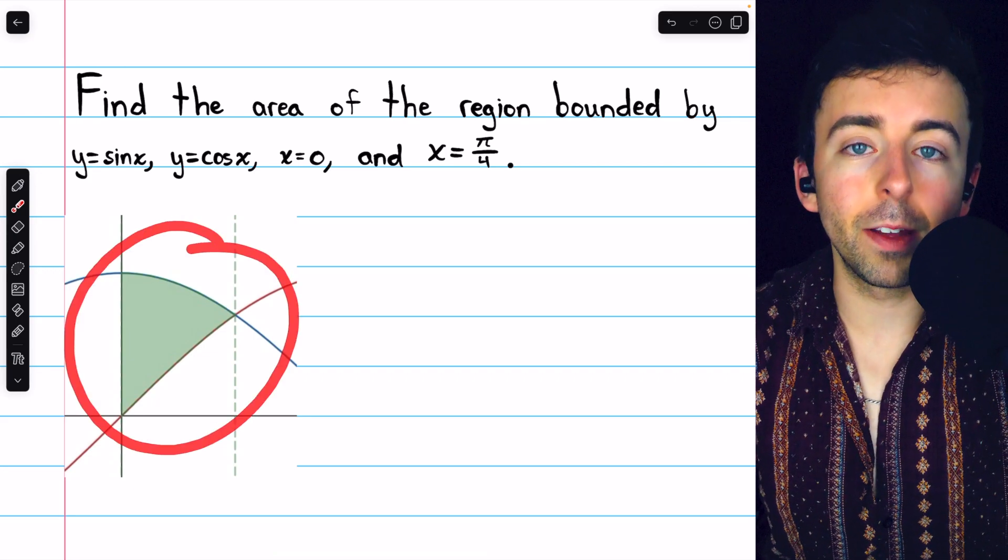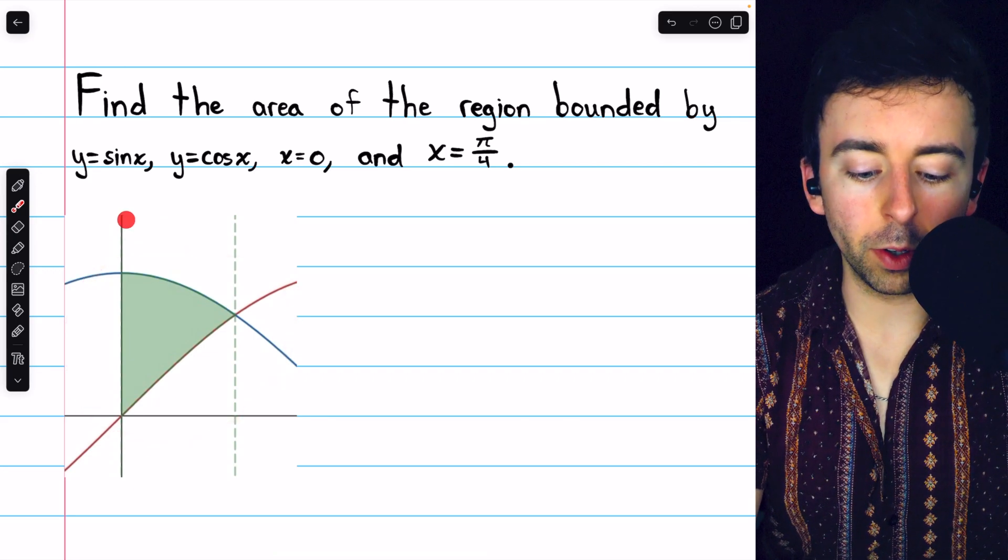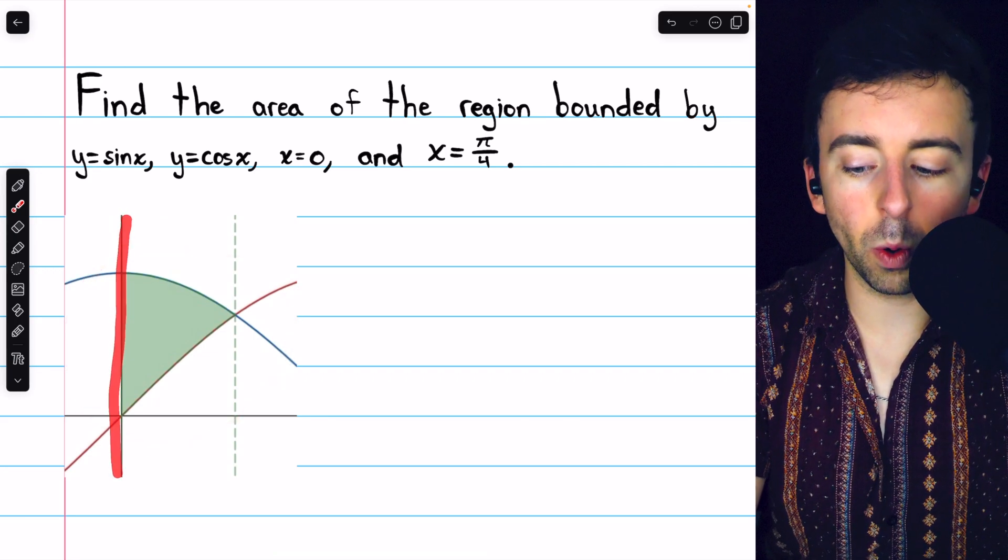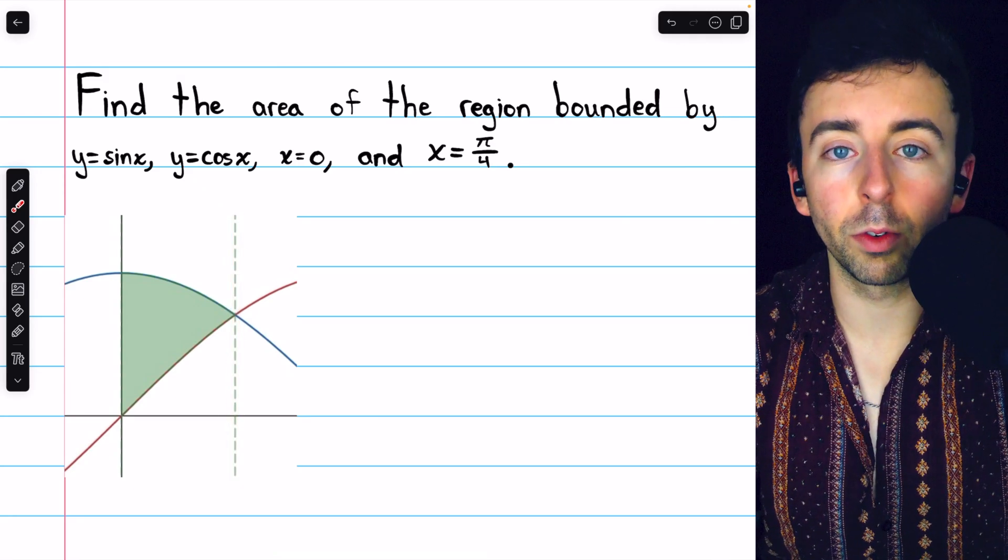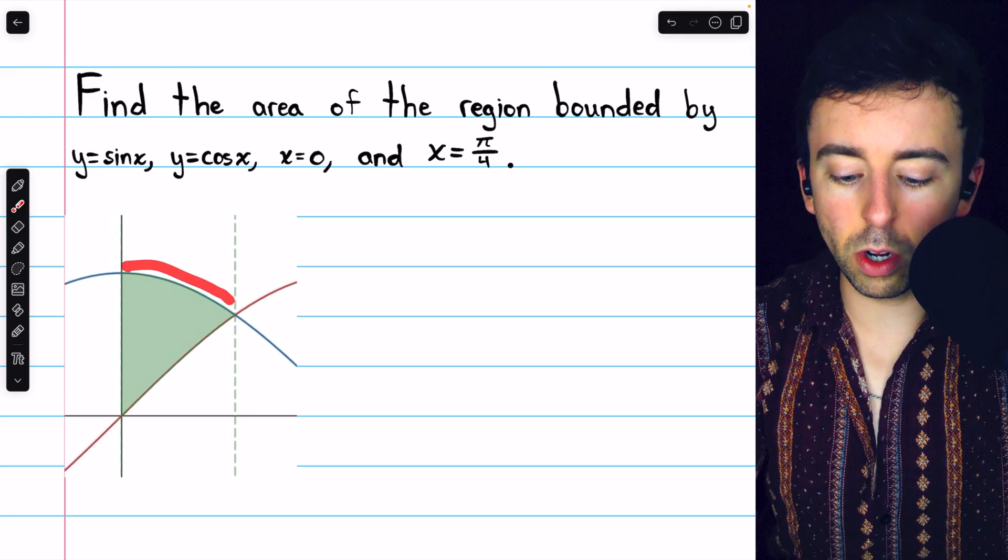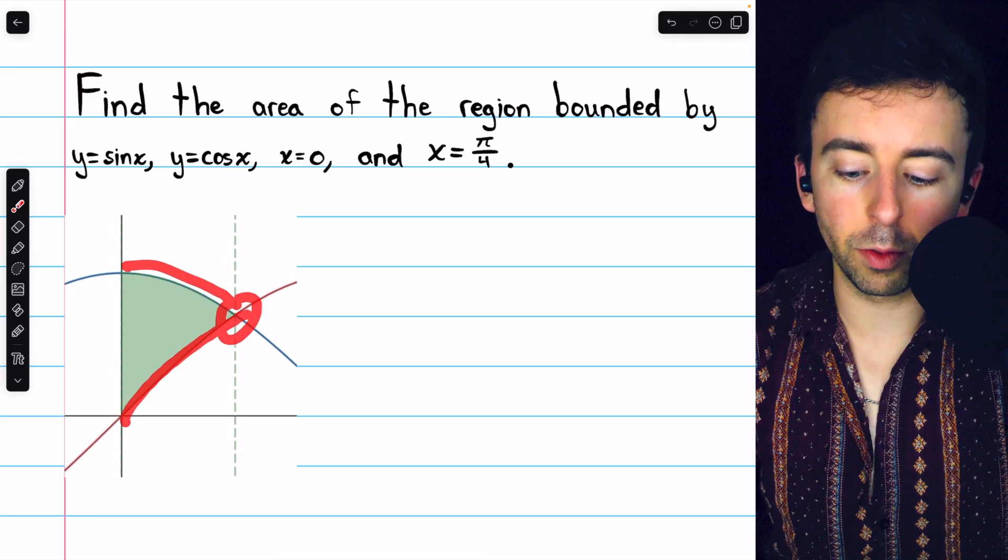Here we have a picture of that region. The vertical line x equals zero is, of course, right on the x-axis, and then this is the vertical line x equals pi over four. We see that the two curves intersect there at pi over four.